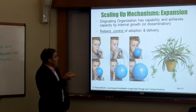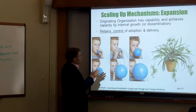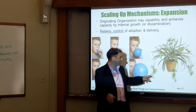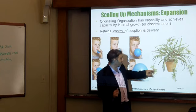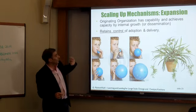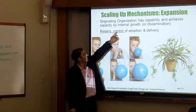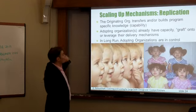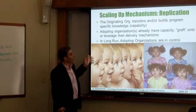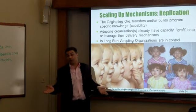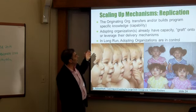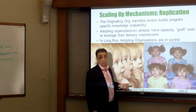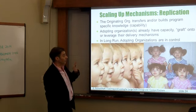Expansion can be thought of as an organization getting bigger, or sending out shoots like a franchising model. The key element — both the plus and minus — is control: you retain control of adoption and delivery. By contrast, in replication you lose control once you hand it off to another delivery mechanism. But the advantage is that you transfer capability to something that already has capacity, so you don't have to build capacity like you do in expansion.